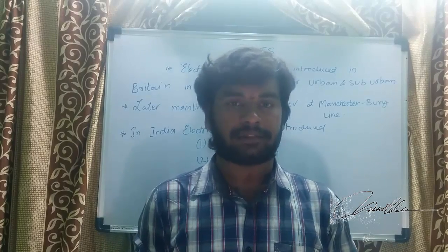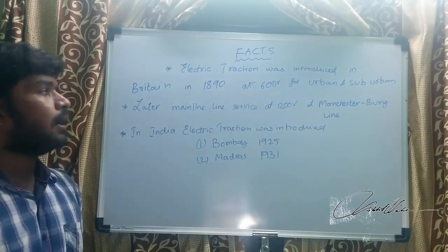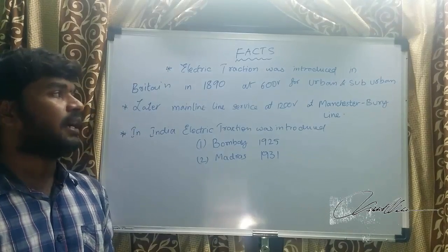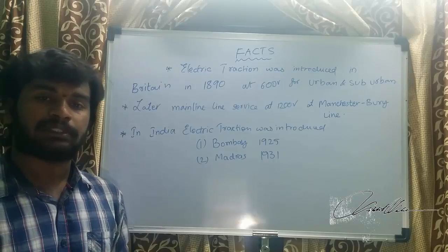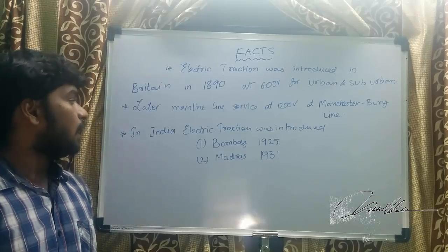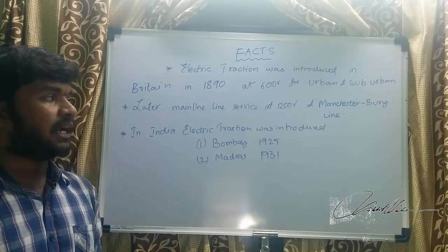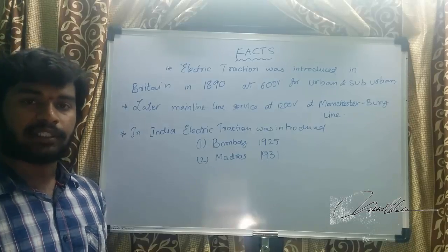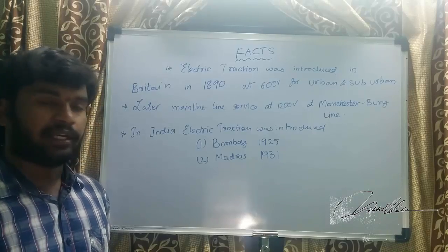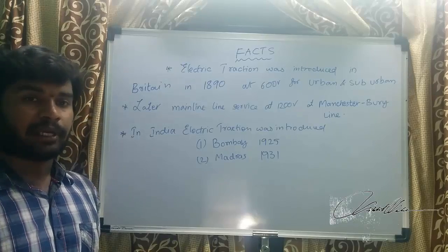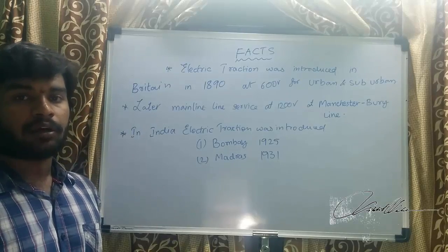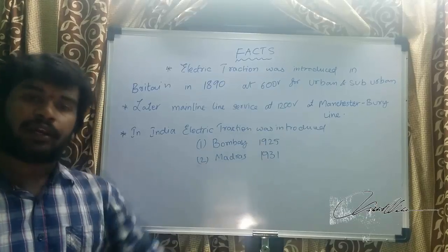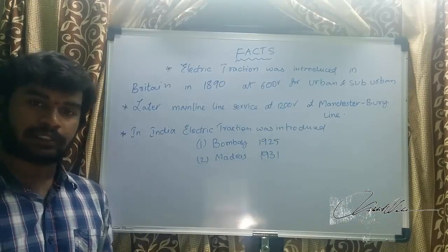Some important facts about electric traction: electric traction was first introduced in Britain in 1890 at 600 volts for urban and suburban services. Later, mainline service began at 1200 volts on the Manchester to Bury line. In India, electric traction was first introduced in Bombay in 1925, and next in Madras in 1931.